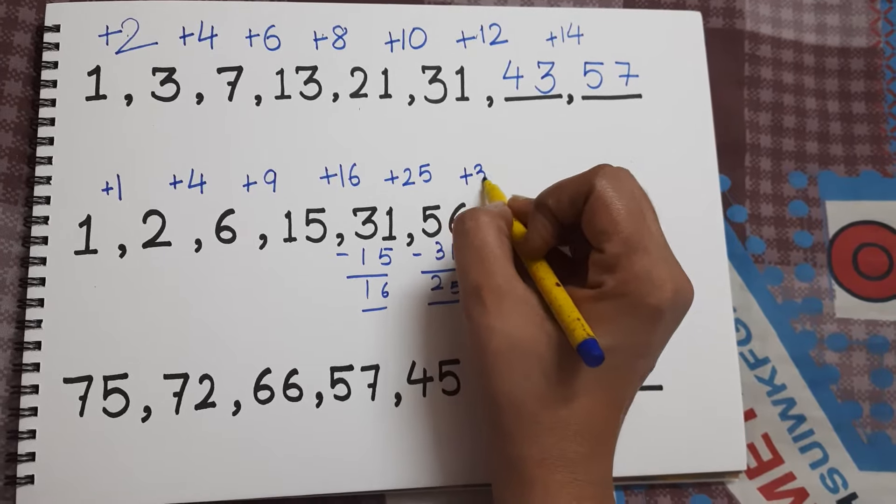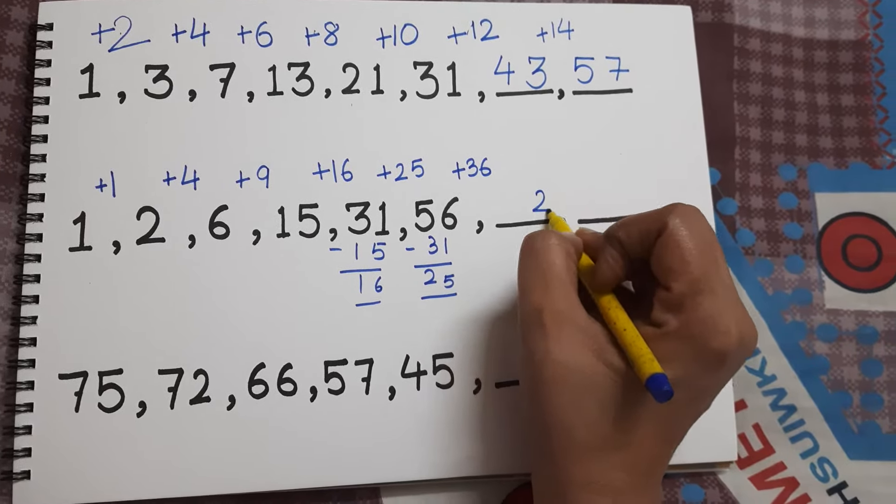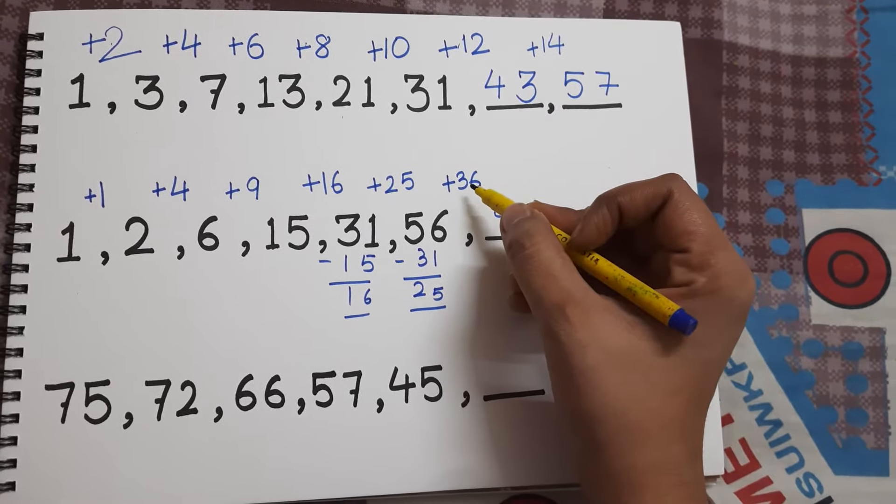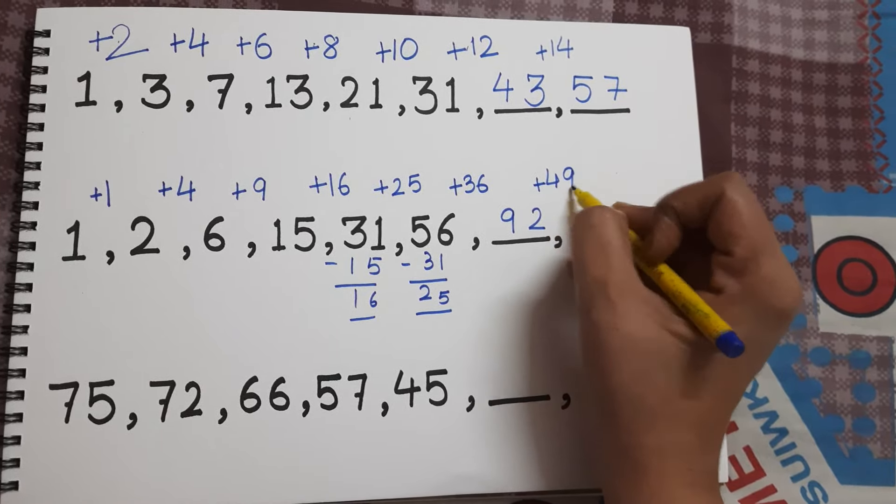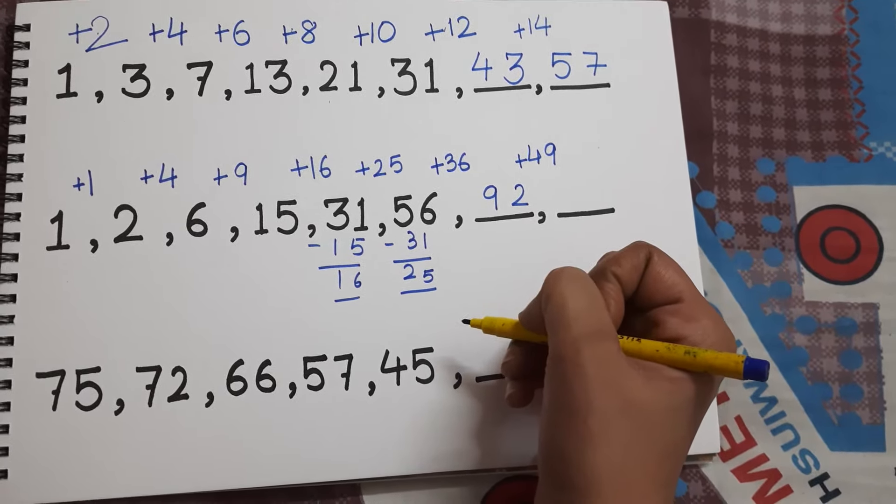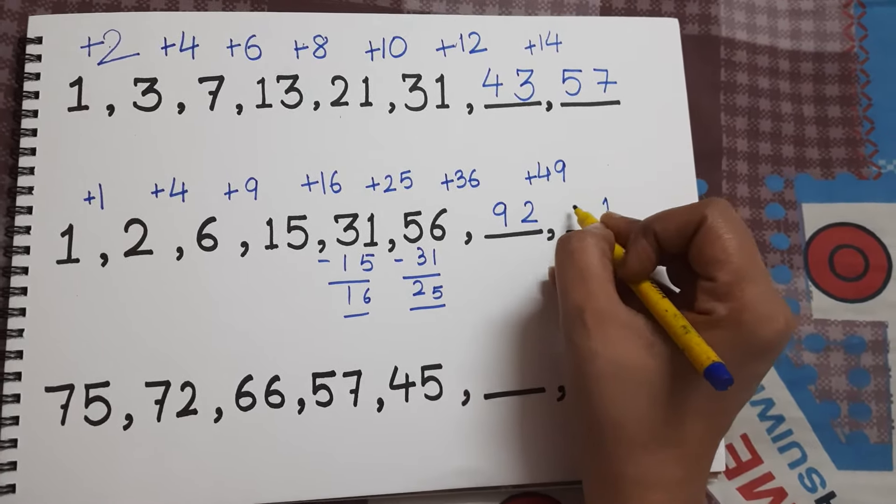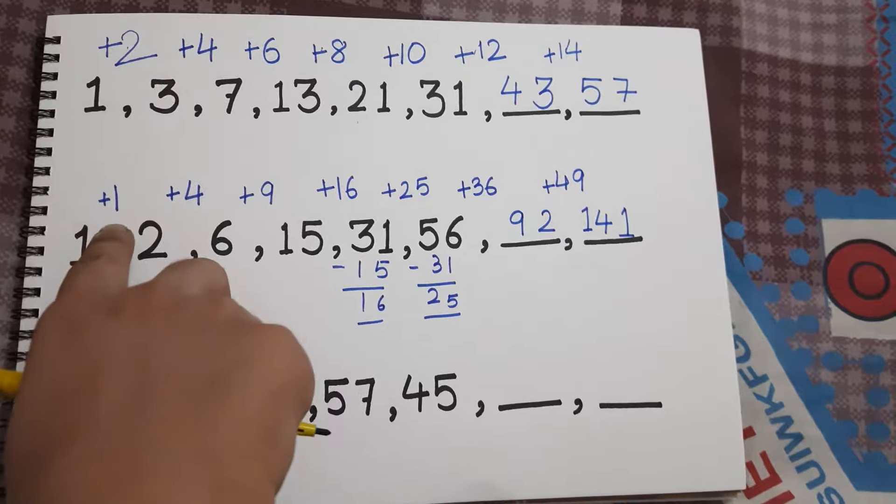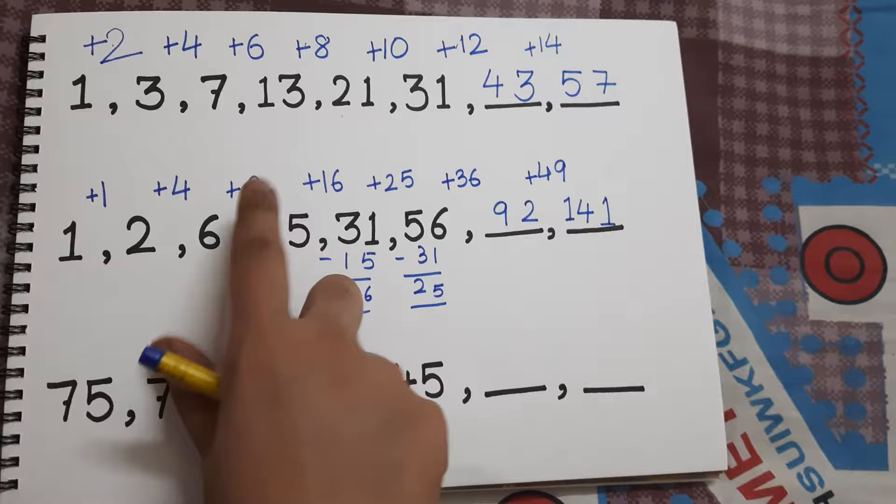I am going to add 36, right? So 6 plus 6 is 12. Next, 7 times 7 is 49, and I will add 49 to 92 to get my last number of the series. So 9 plus 2 is 11, 10 plus 4 is 14. So you need to be very careful. It is not always that you will get simple addition or subtraction. You need to see the numbers and remember the tables also.